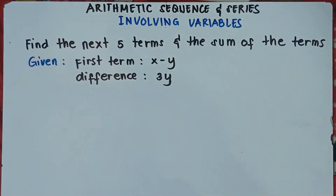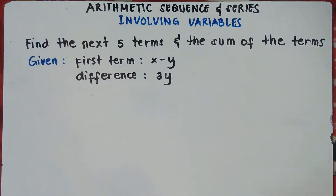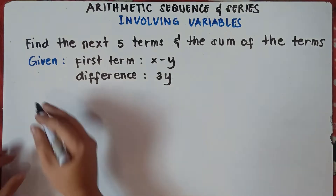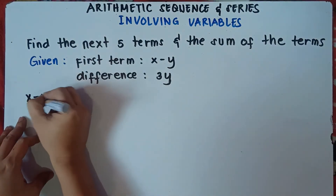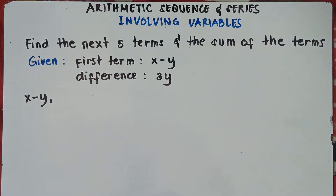Find the next five terms and the sum of the terms, given first term x minus y and the common difference is 3y.